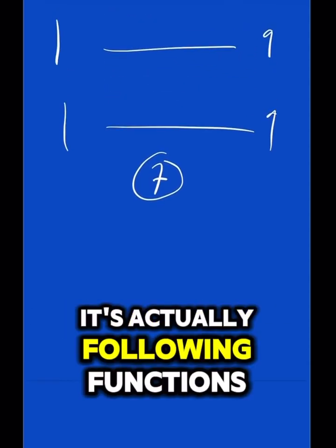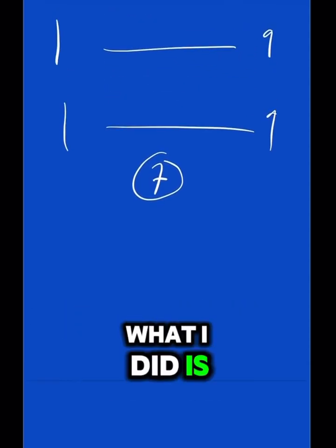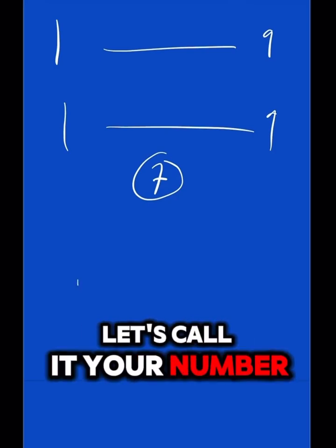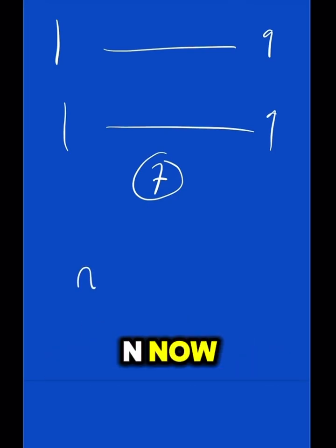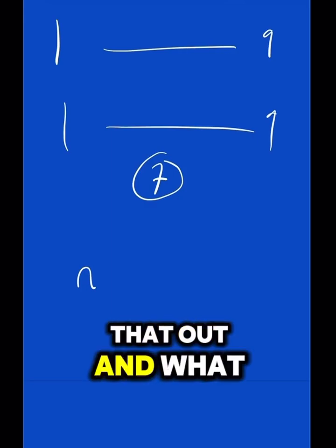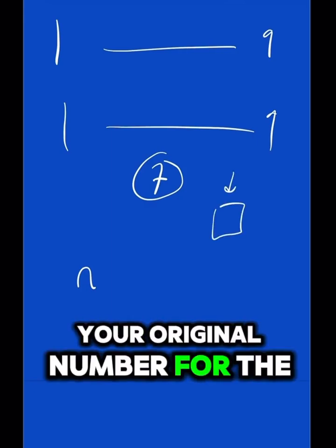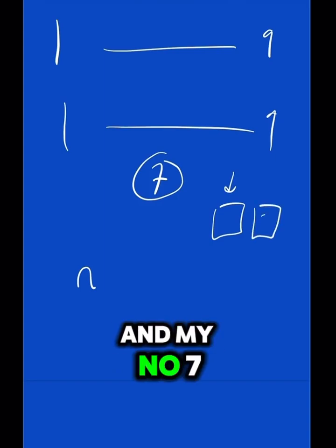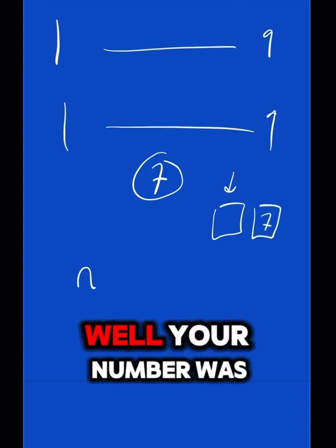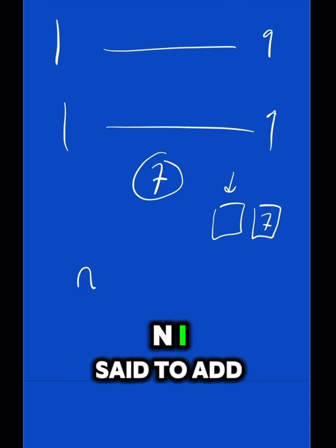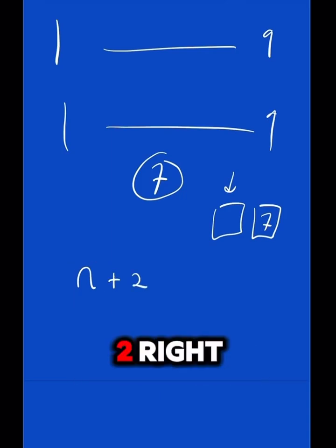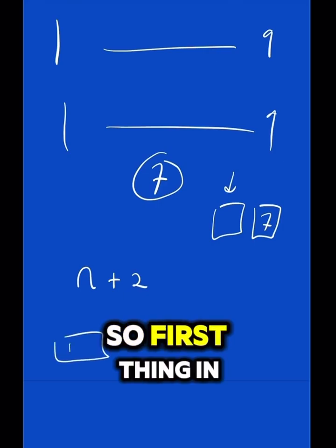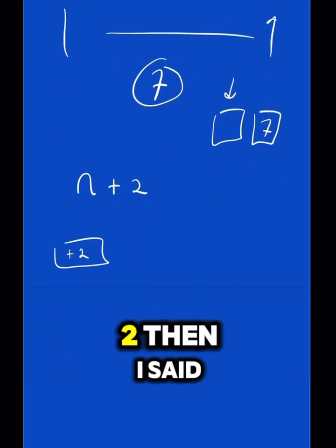Well, it's actually following functions. What I did is you have a number. Let's call your number n. How did I work that out? How did I get your original number for the first place and my number 7 for the next place? Your number was n. I said to add 2, right? So, first thing in the box is add 2.